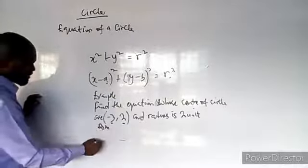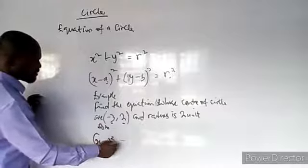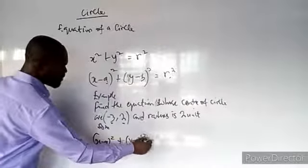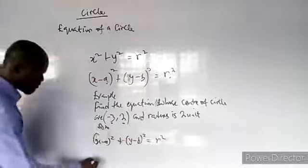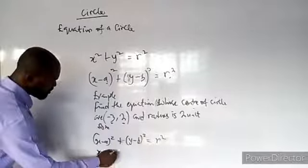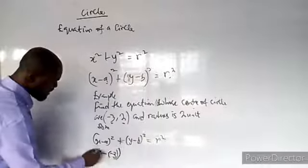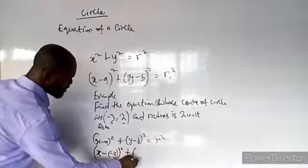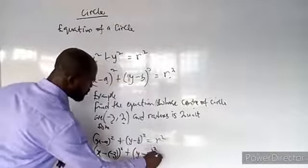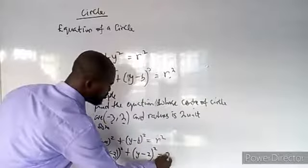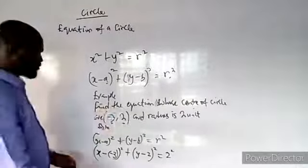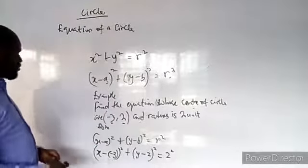So if you put those values there in this first equation, you will have something like this. Solution using this one: (x - a)² + (y - b)² = r². If you put this value, you have (x - (-3))² + (y - 2)² = 2². That's what you will get. Then you open it up.